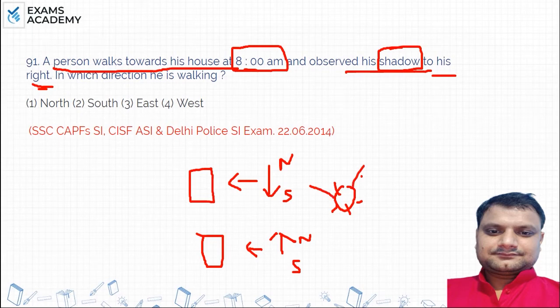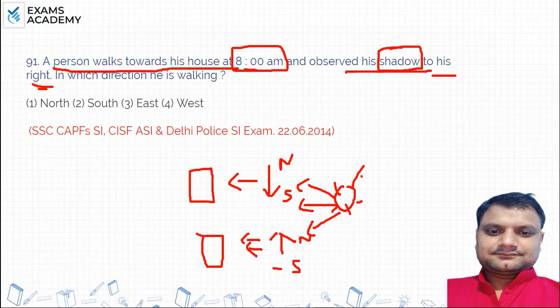If he is in the morning time, the shadow will be to the right. If he goes south to north, then the shadow will be to the left. But his shadow is to his right, so he is not going south to north.